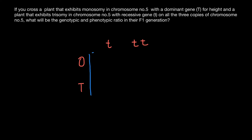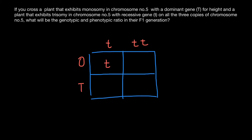So if we build a simple Punnett square, let's take a look at what we are going to get in the F1 generation. We are going to get T here — I'm not going to put the zero because zero means just the absence of the chromosome — and T, T here, capital T, small t here, and capital T and two small t's here.